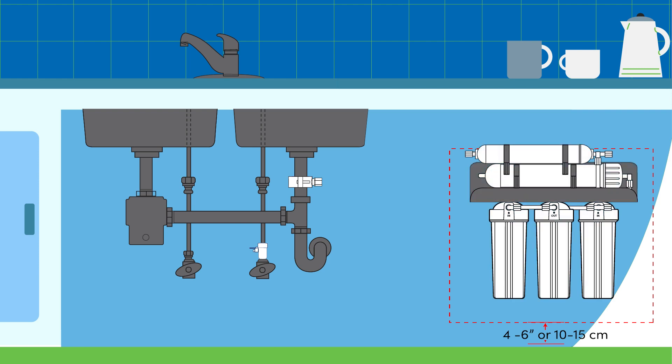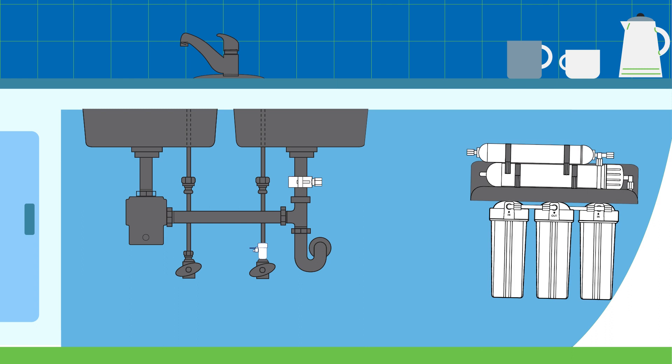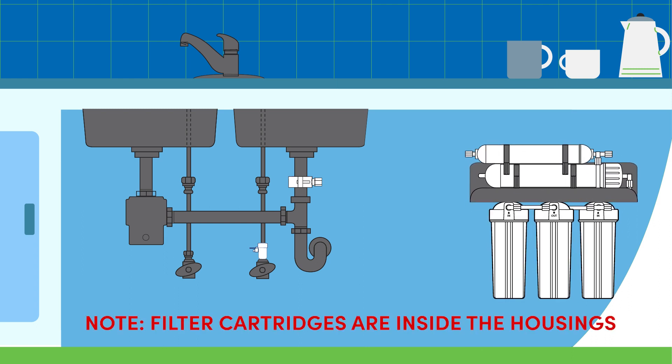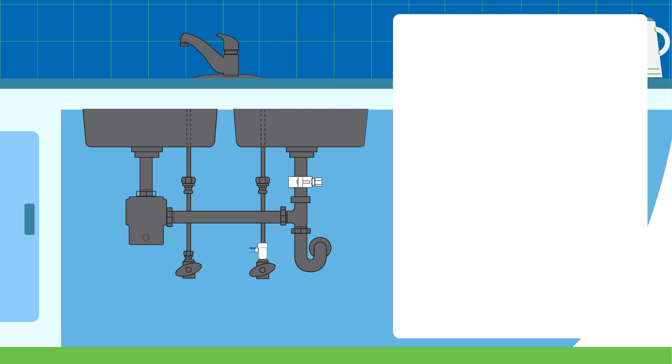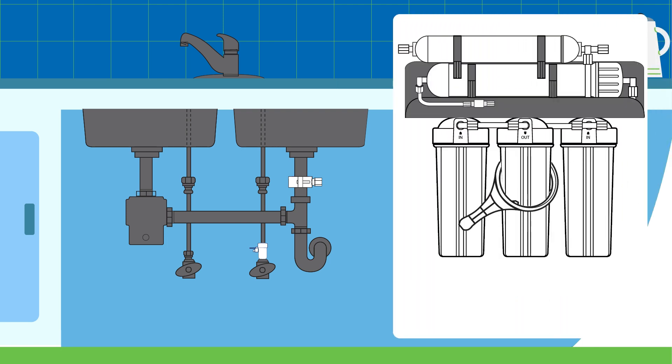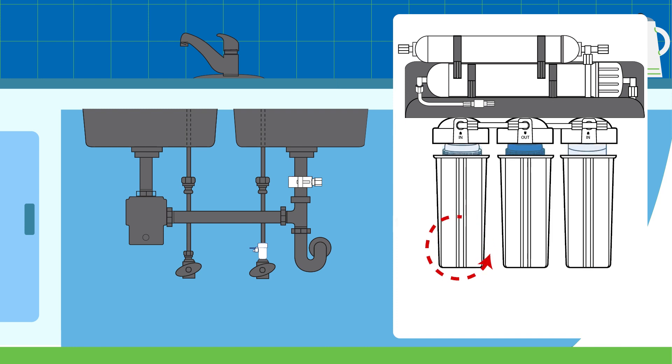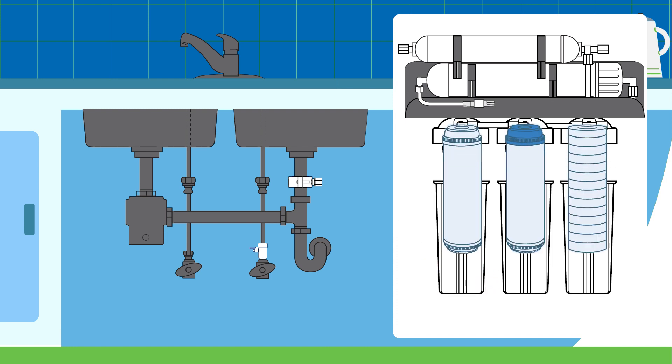Hang the RO system on the mounting screws. Note that the filters come with a protective wrap that needs to be removed before operation. Unscrew the filter housing using the wrench and turn it counterclockwise. Remove the filter from the housing, take off and discard the plastic wrapping, then reinstall the filter into the housing.